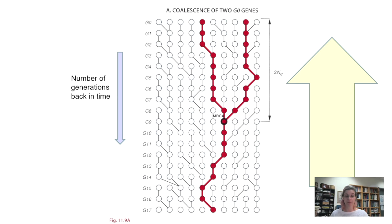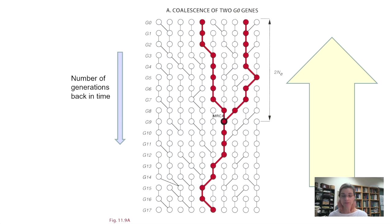Let's work from generation 17 at the bottom, deep back in time, and move forward in the direction of the large arrow. Notice that G17 passed on the same allele all the way up to generation nine. But then, something happened between generation nine and eight — a new mutation arose, a founder event occurred. G9 had some descendants with the G17 allele and others with an entirely new allele. Therefore, G9 is the most recent common ancestor for those two alleles, and that is where the founder event happened.